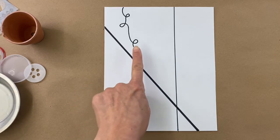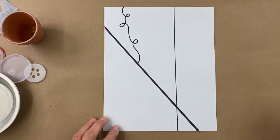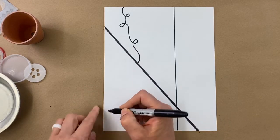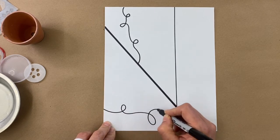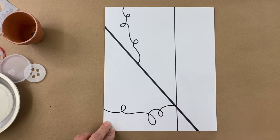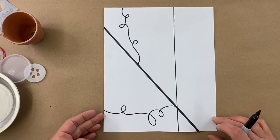I'd like you to repeat that same line type somewhere else on your paper. So again, starting from the edge, curly, swirly and hit the paper.